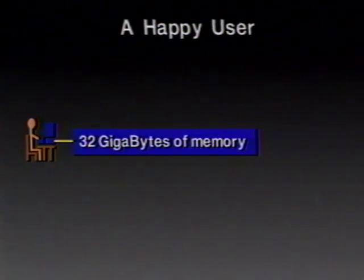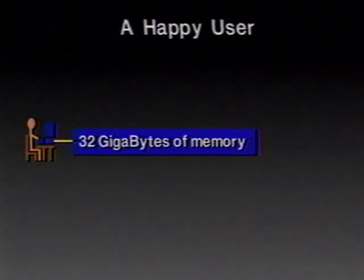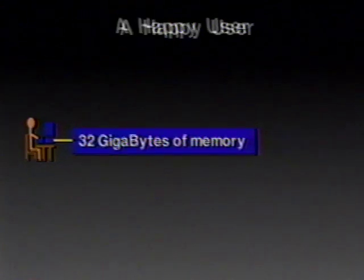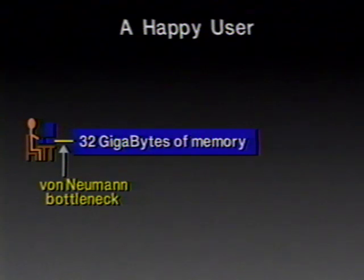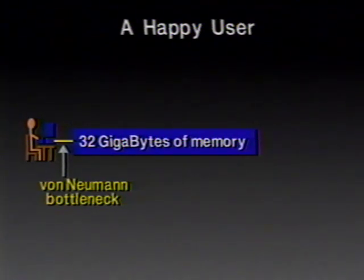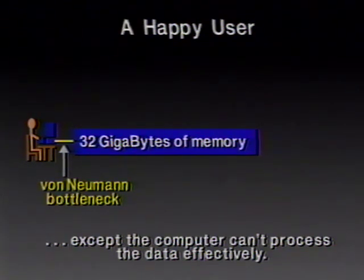So we're going to fix that. What you need in order to work on a big problem is a big memory. We are going to give this user a big memory — how about 32 gigabytes? That's a good start for main memory. And now we have a very happy user that can compute on very big problems, except that he's got a von Neumann bottleneck. There's a big memory, but still only a very tiny processor, and the computer can't process the data effectively because it's got to get at the data one word at a time through that bottleneck.